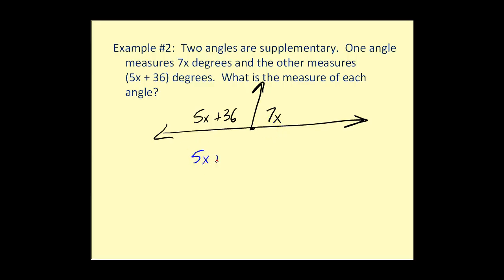So we'd have five x plus thirty-six plus seven x equals one eighty. So we solve this equation. Subtract thirty-six on both sides. Divide by twelve. Here we have x equals twelve.